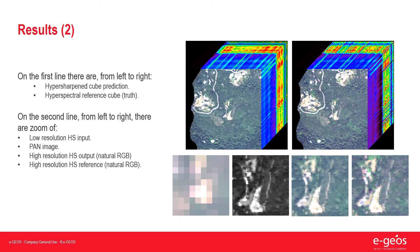Here are other results. On the first row, from left to right, there are the hypersharpened cube prediction and the hyperspectral reference cube, the ground truth. On the second row, from left to right, there are zooms of the low resolution hyperspectral input, the panchromatic image, the high resolution hyperspectral output in natural RGB, and the higher resolution hyperspectral reference in natural RGB.